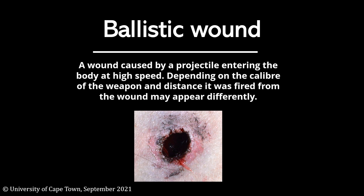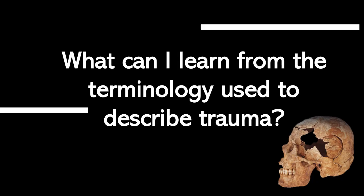A ballistic wound is a wound caused by a projectile entering the body at high speed. Depending on the caliber of the weapon and the distance it was fired from, the wound may appear differently. In summary, the terminology used to describe trauma implies what kind of force was used to generate the wound, and this may provide information about the type of weapon that was used.